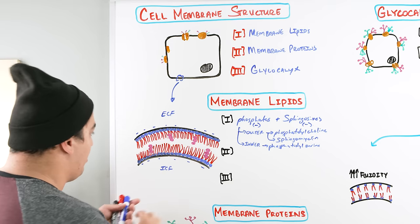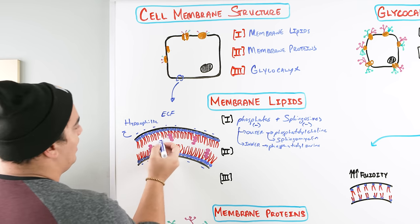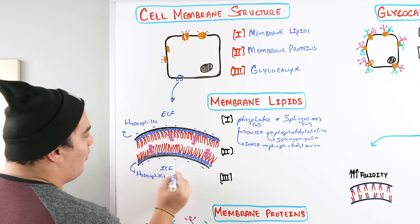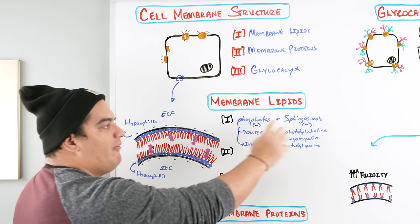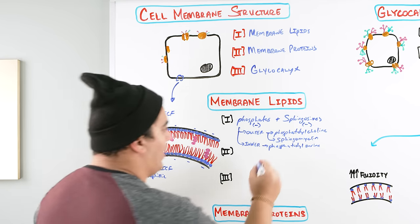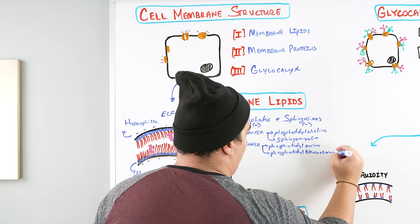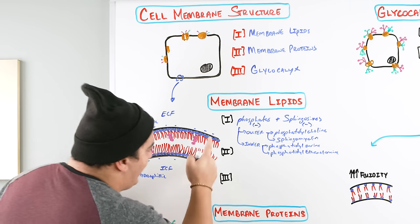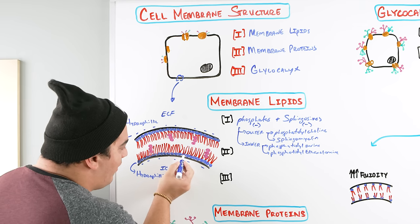So on the outer membrane and inner membrane you have phosphates and sphingosines which are negatively charged, making them hydrophilic and able to interact with water in the intracellular and extracellular fluid. On the outer: phosphatidylcholine and sphingomyelin. On the inner: phosphatidylserine and phosphatidylethanolamine. The key point is they're negatively charged, polar, and hydrophilic.